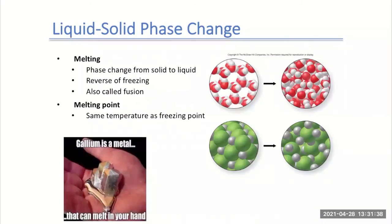The opposite is melting — going from the solid to the liquid — which is the reverse of freezing, also called fusion sometimes. The melting point is going to be the same temperature as the freezing point; we're just looking at the opposite process. Some metals, like gallium, have such low melting points — their intermolecular forces holding them together are so weak — that the heat from your hand can actually melt it.